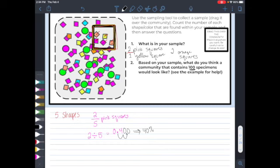40% means that in a group of 100, there will be 40 of this thing. So what I can say is that since my sample is two fifths pink squares, and that means it's 40% pink squares, that in a sample of 100, I will have 40 pink squares.